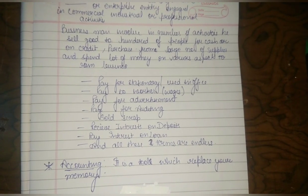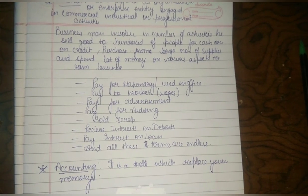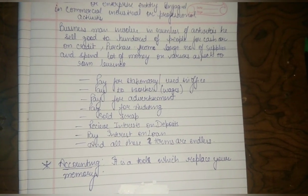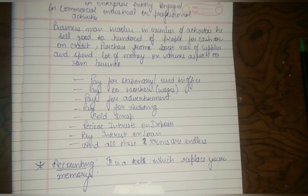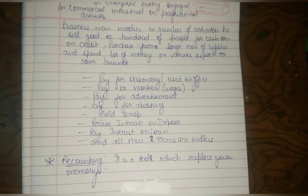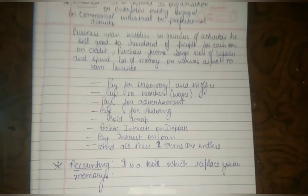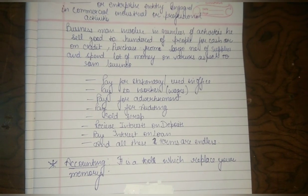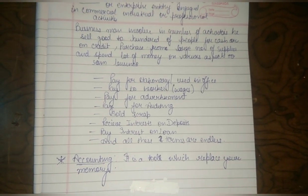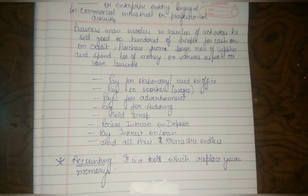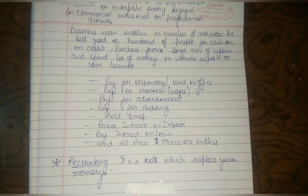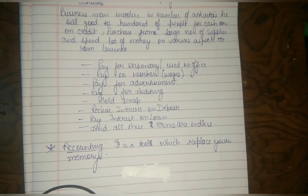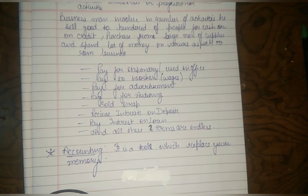They also have to pay for advertisement, pay for auditing, sell scrap, receive interest on deposits, and pay interest on loans. These terms are endless — there are so many payments a businessman has to make. Auditing is actually the checking of one's accounts and functions, so we have to pay for auditing as well.